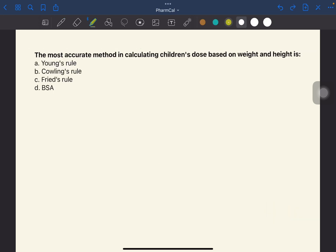The most accurate method in calculating children's dose based on weight and height is BSA, body surface area. BSA calculations are very useful not only for pediatric patients but also for those in chemotherapy and especially for those with limited therapeutic index drugs.